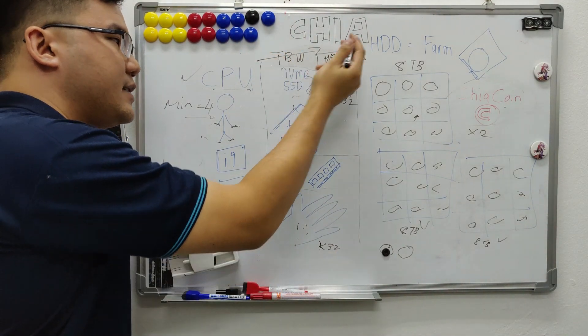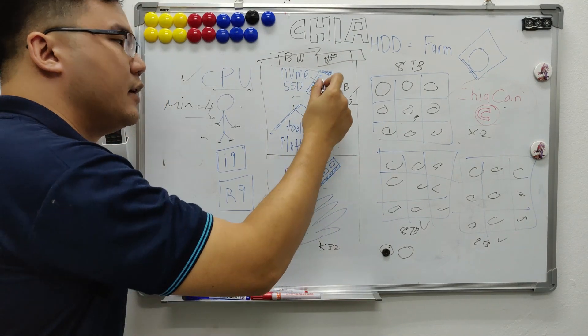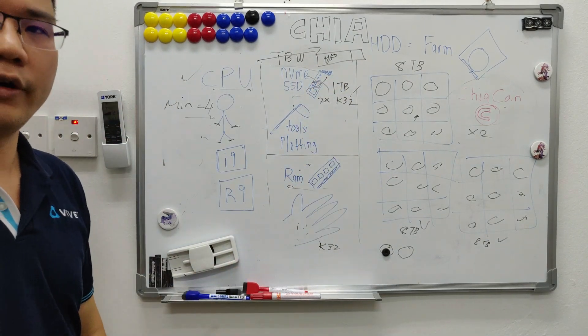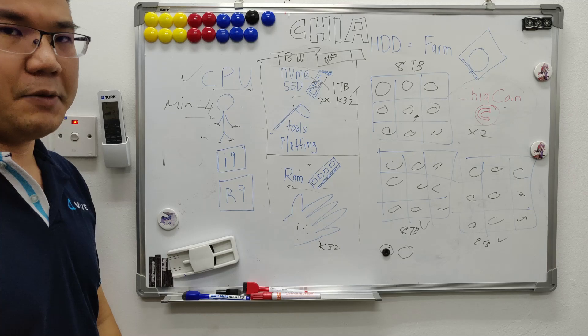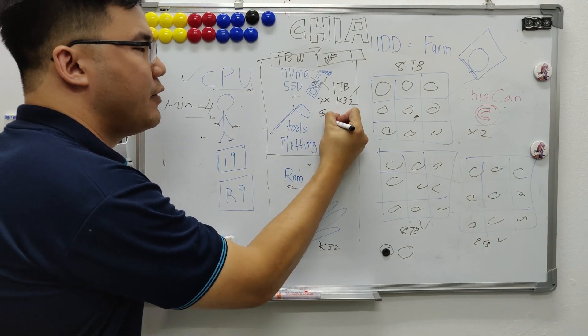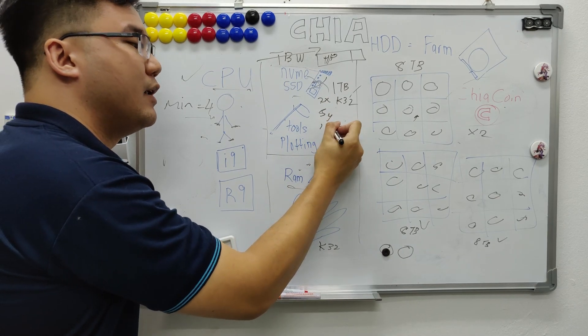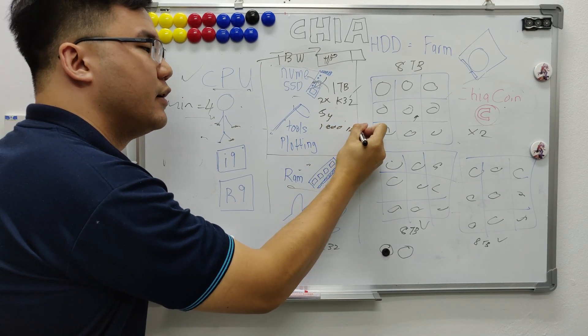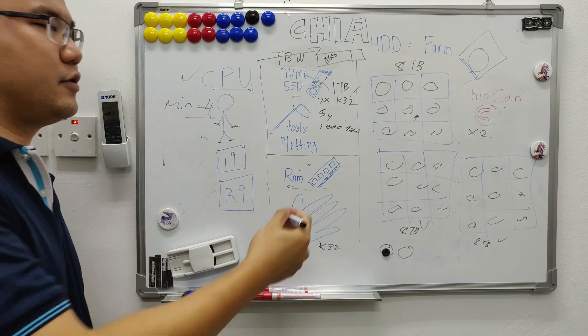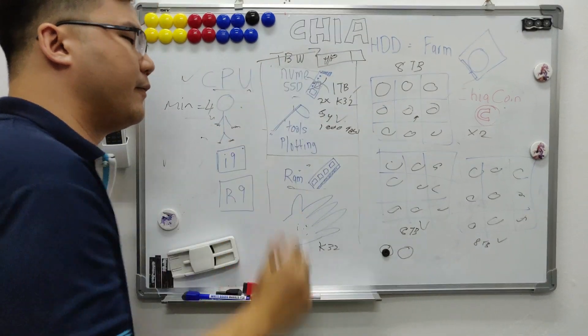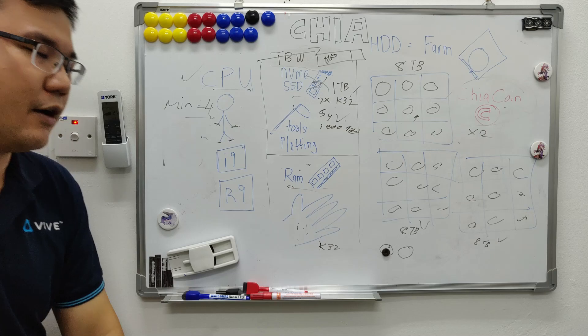Once your NVMe dies and exceeded your TBW, let's say it exceeded your TBW and it dies, so there will be no more warranty. For warranty on NVMe SSD, it's based on the years, example, 5 years or your TBW, for example, 1,000 TBW, whichever that reaches first. So, for example, reach either this one or this one, then your shovel will be useless. You need to get a new shovel.